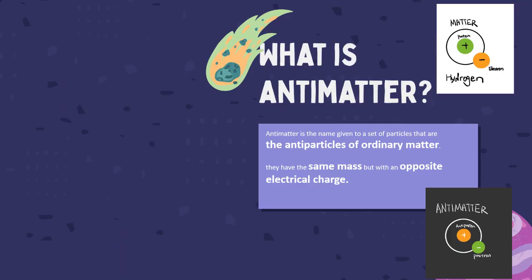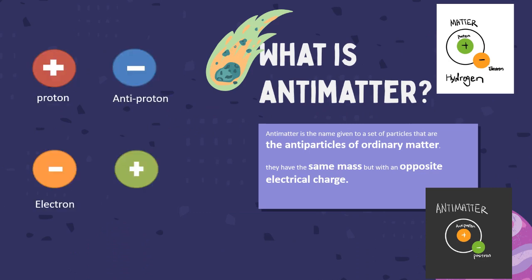What is antimatter? Antimatter is the name given to a set of particles that are the antiparticles of ordinary matter. This means that they have the same mass as their matter counterparts, but with an opposite electrical charge. For example, the positron is an antiparticle you may have heard of, which can also be referred to as the antielectron. It has the exact same mass as a regular electron, but with a relative charge of plus one instead of minus one.